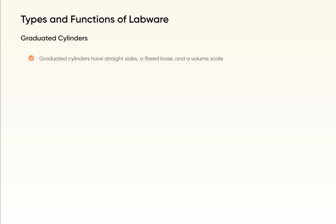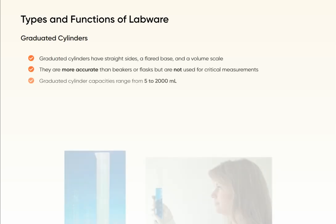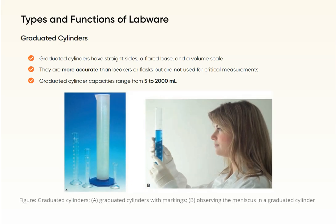Graduated cylinders have straight sides, a flared base, and a volume scale. They are more accurate than beakers or flasks but are not used for critical measurements. Graduated cylinder capacities range from 5 to 2,000 milliliters. Markings show calibrated volumes, and volume is read by observing the meniscus.